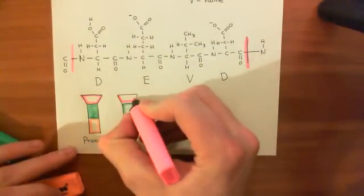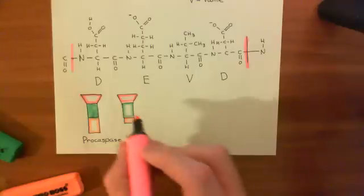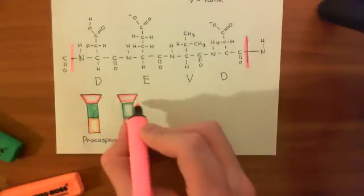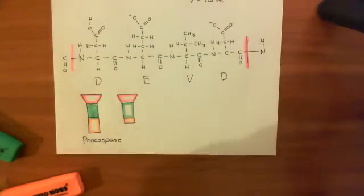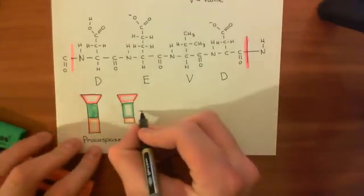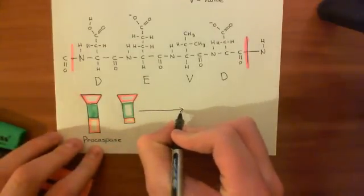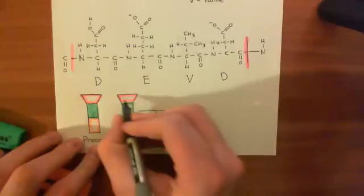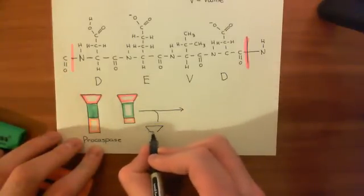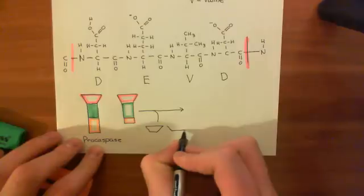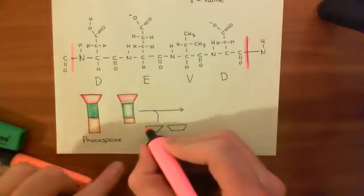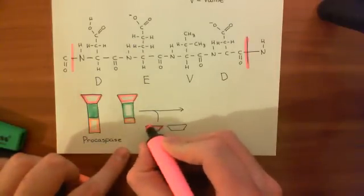To activate these pro-caspases, what's going to happen is that we're going to cut up these three portions. You're going to cut between the pink and the green, and you're going to cut between the green and the orange. And you're going to do this for both of these two subunits. Now these two pink subunits, these two pink bits here, those are known as pro-domains, and they are not used in the active caspase. So they go off and they're not going to be important ever again.